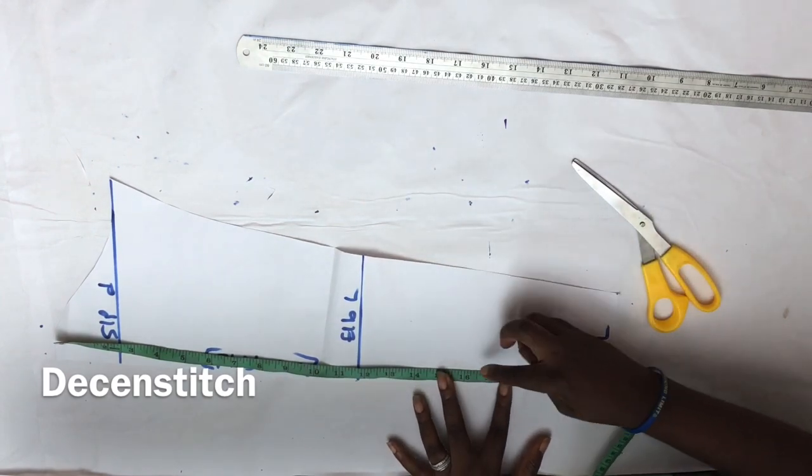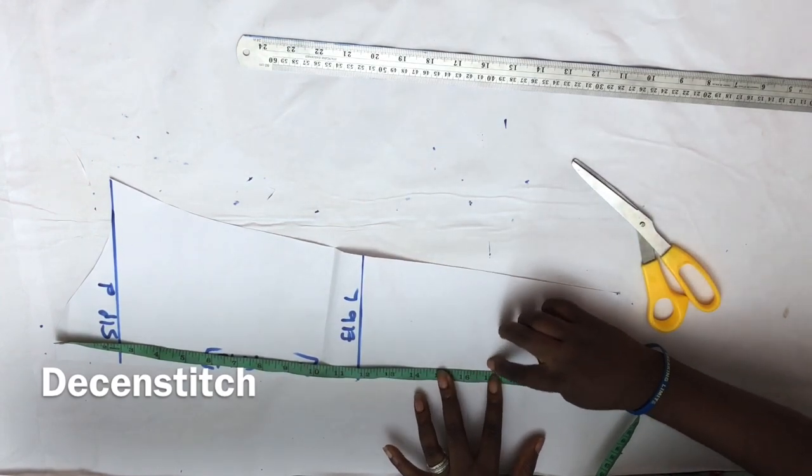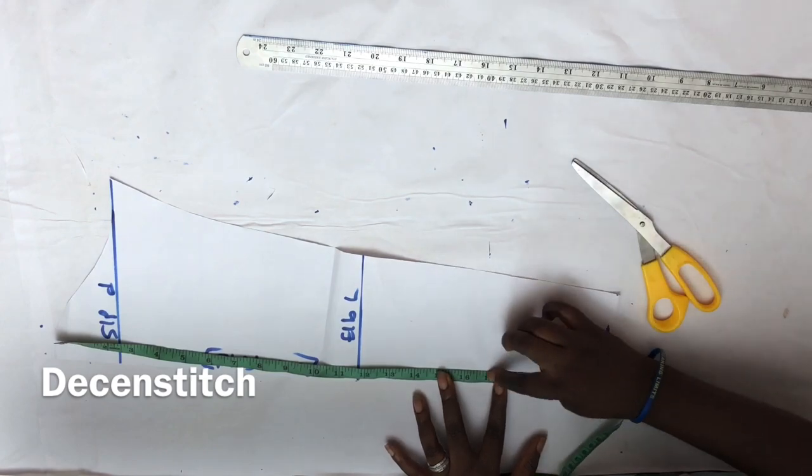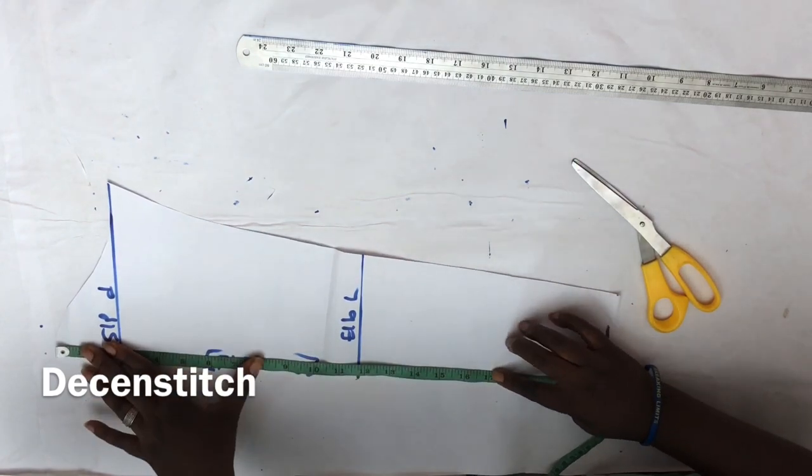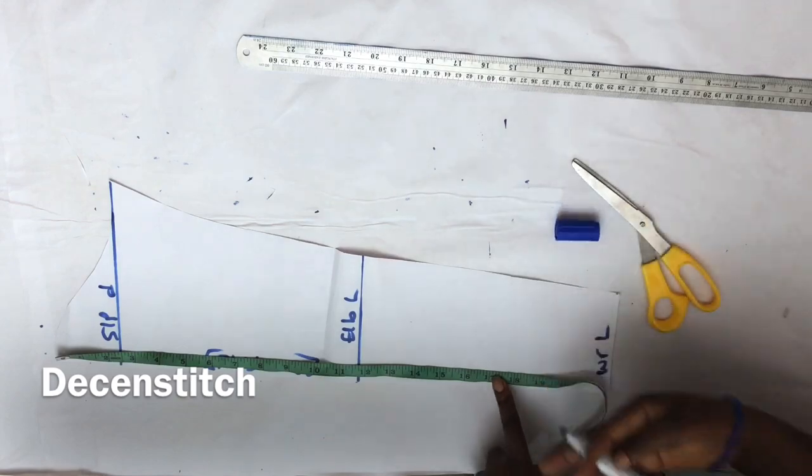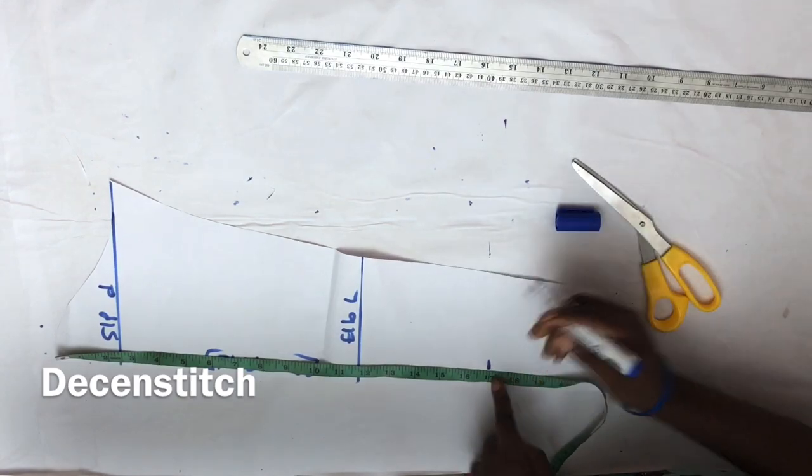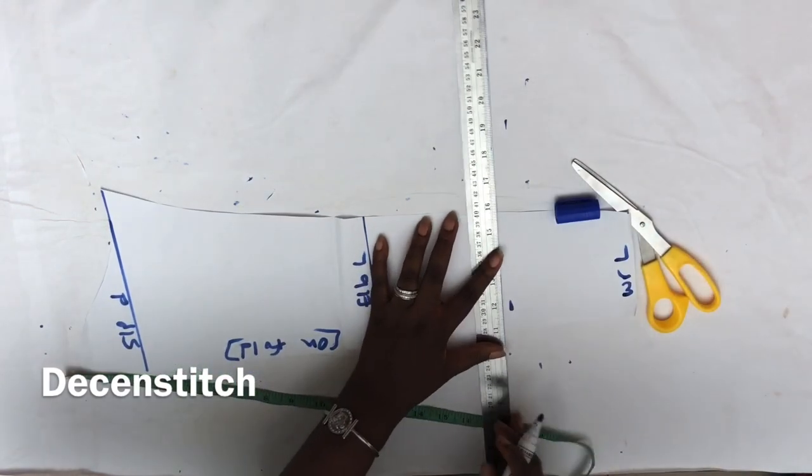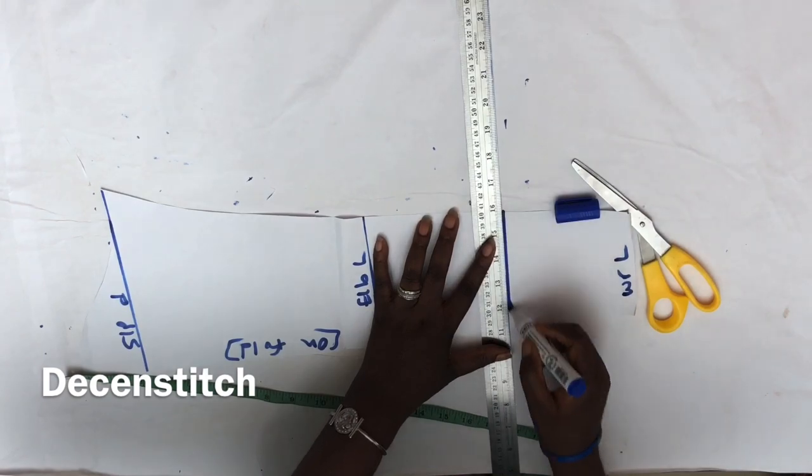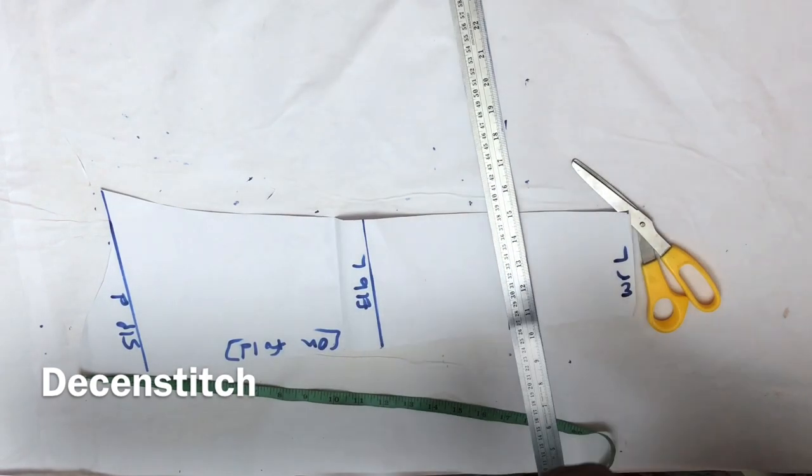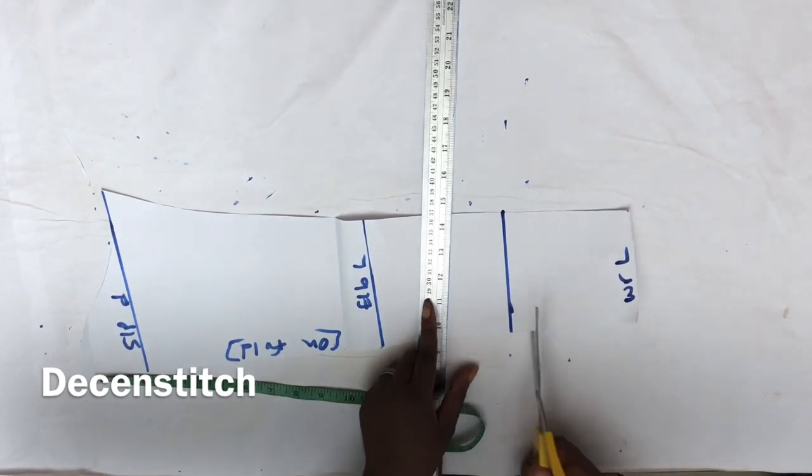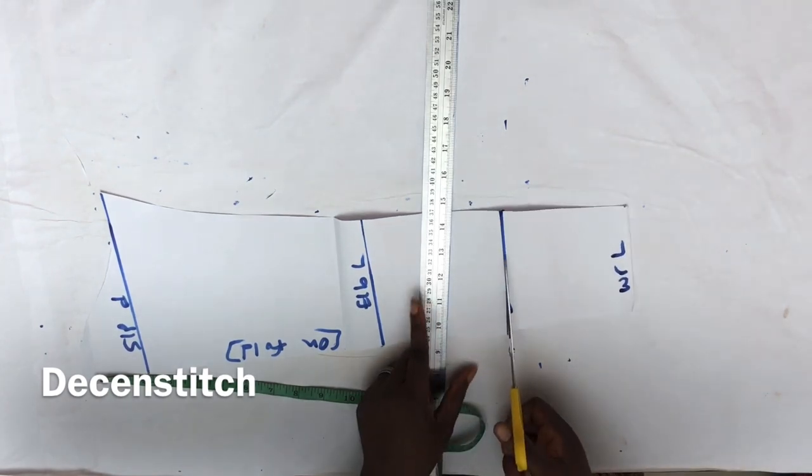The sleeve is a three-quarter sleeve, while this pattern is a long sleeve that gets to the wrist. So I'll measure my three-quarter length that I want. Here I used 17 inches. I'll trim this off and discard it.